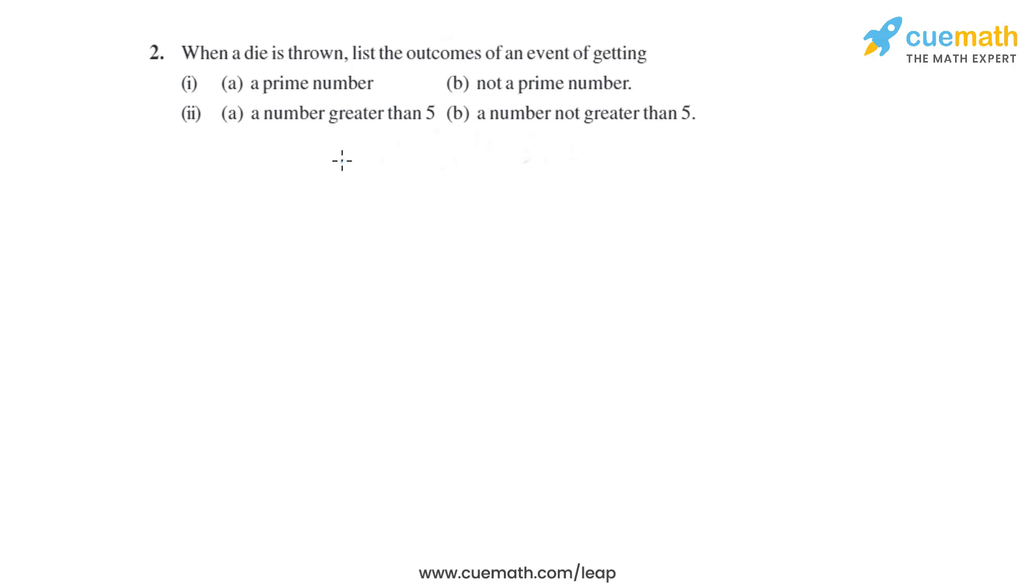As we know, there are six numbers on a die: 1, 2, 3, 4, 5, and 6. These are the six possible outcomes when we throw a die. Now let's move on to the first part.